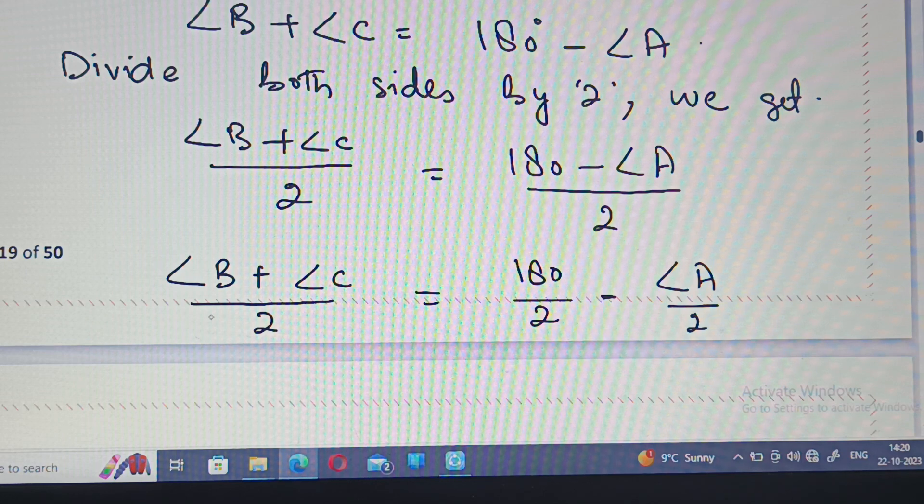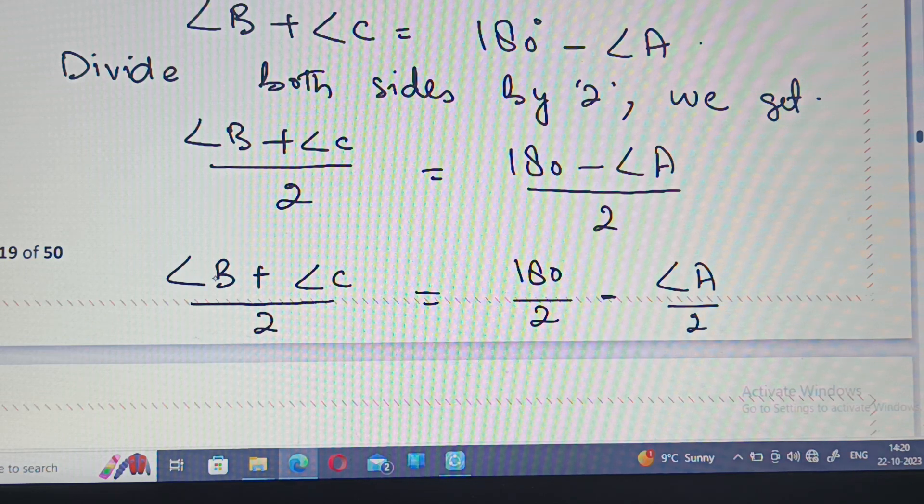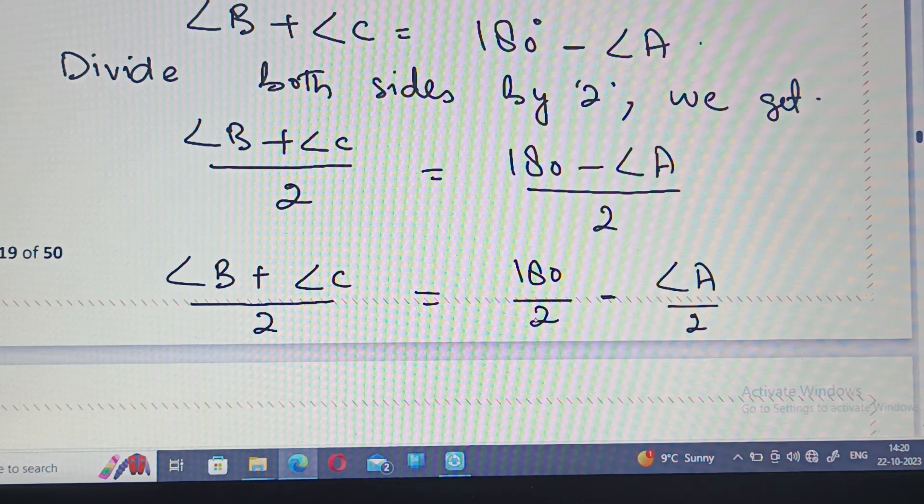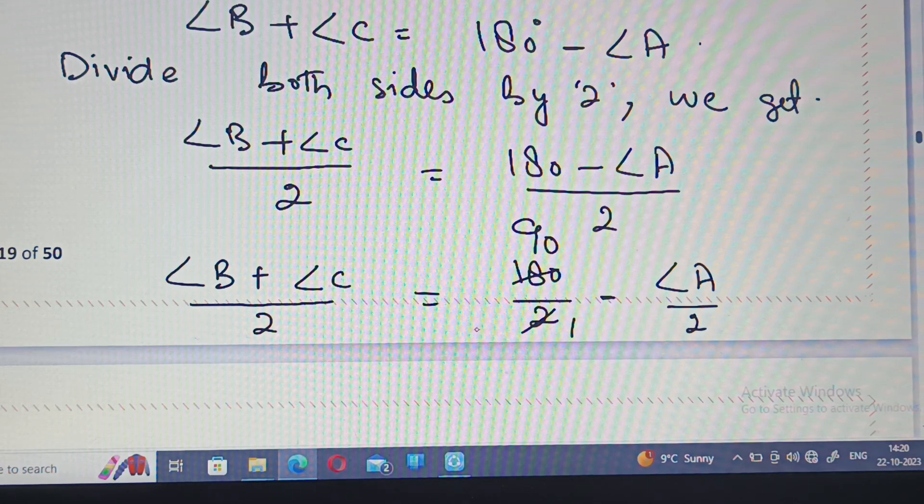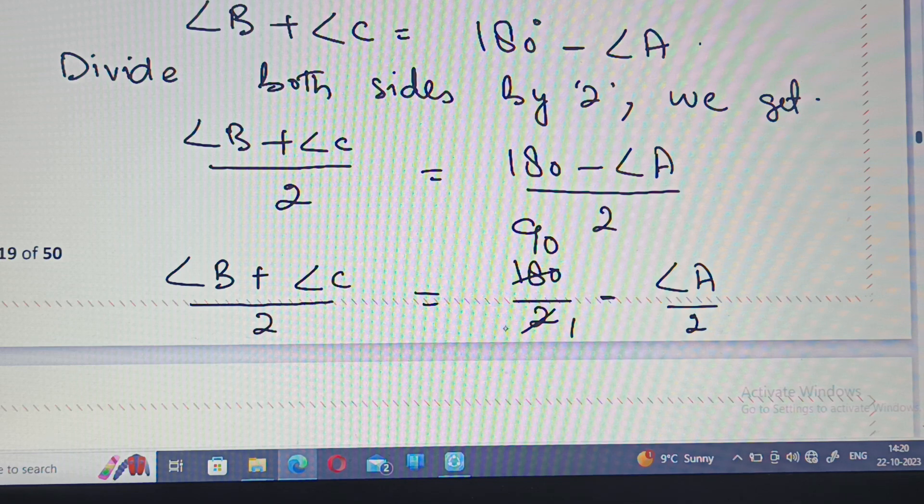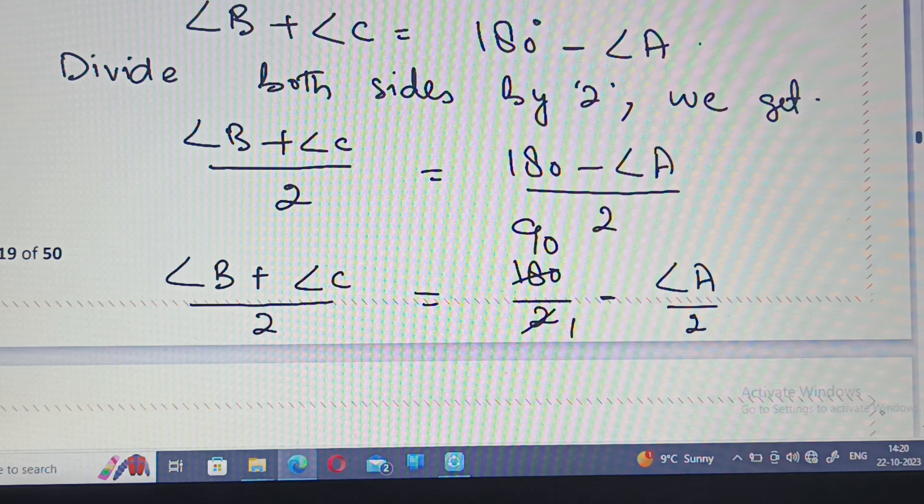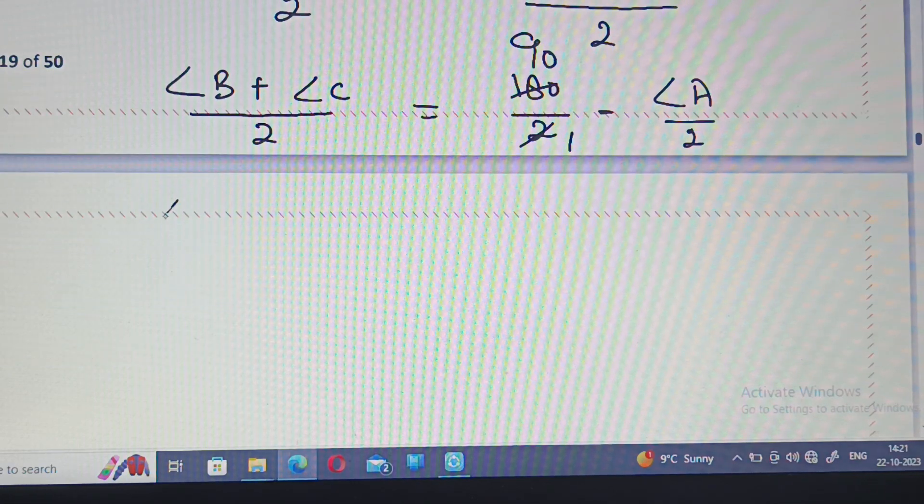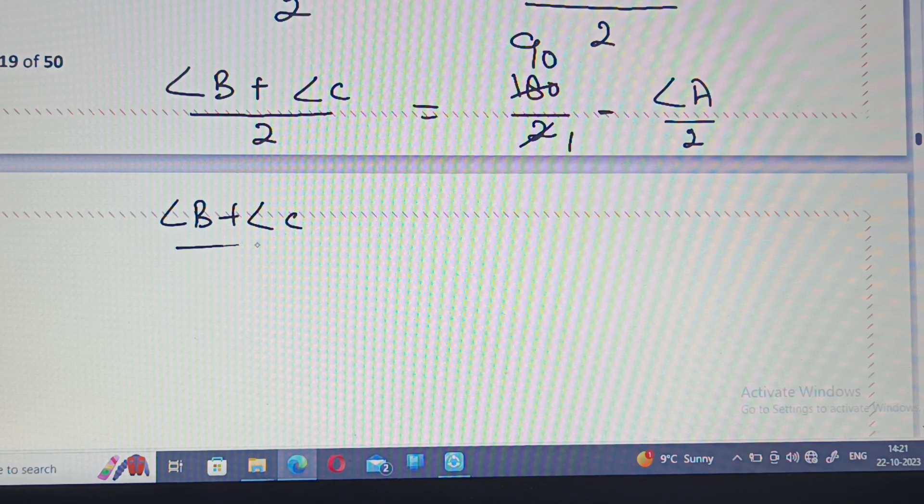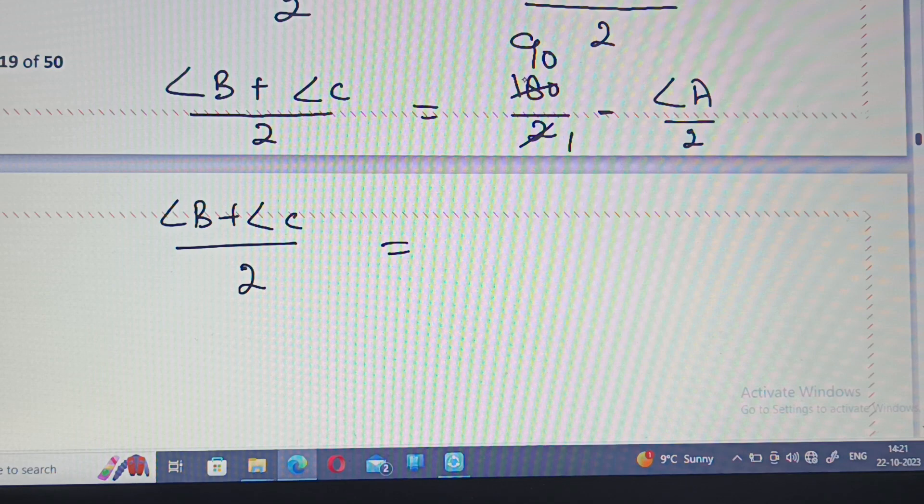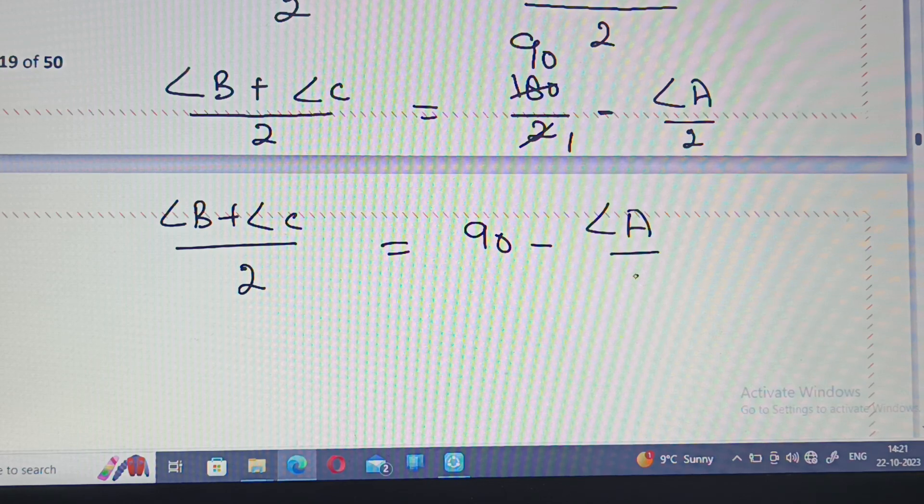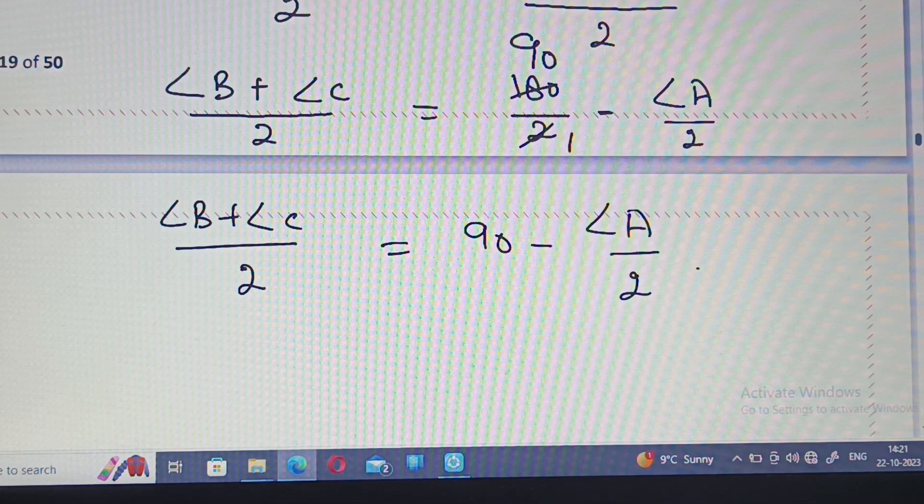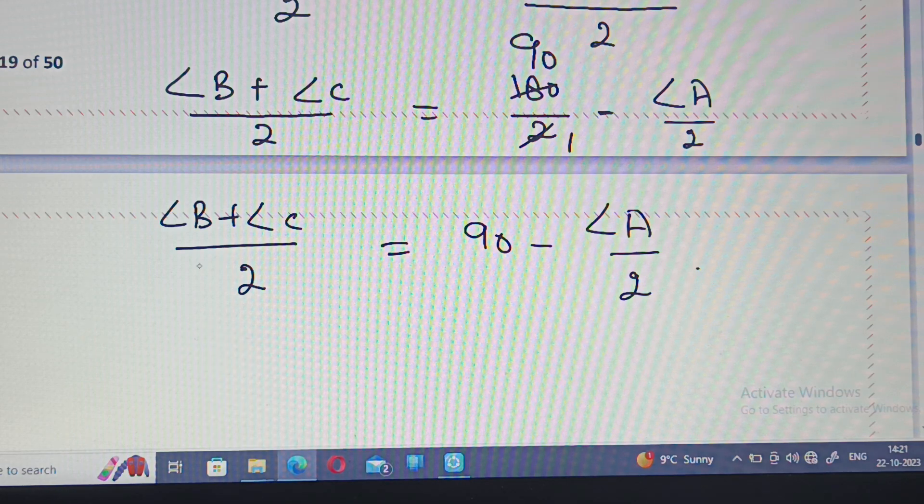180 divided by two is 90. So angle B plus angle C divided by two is equal to 90 minus angle A upon 2.